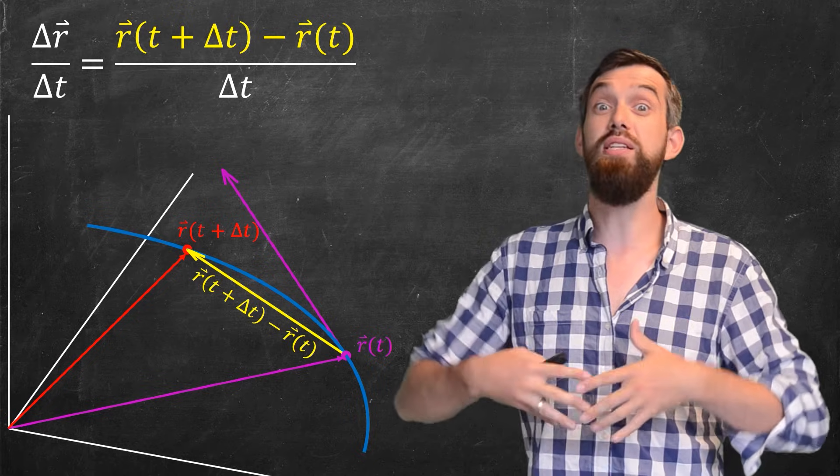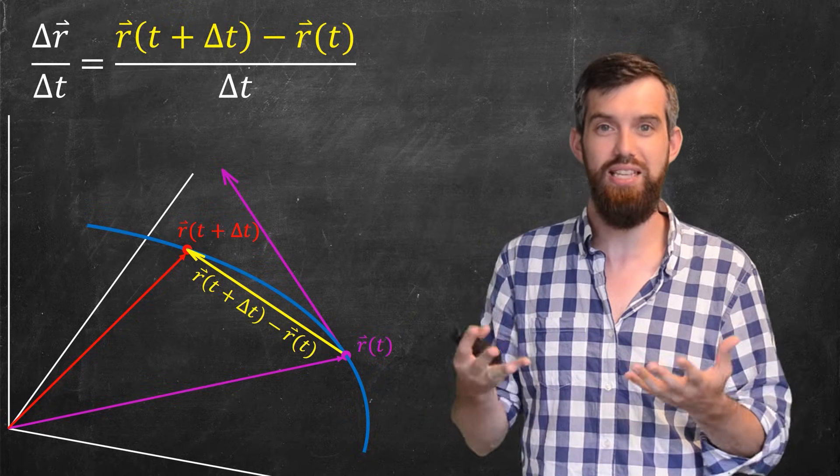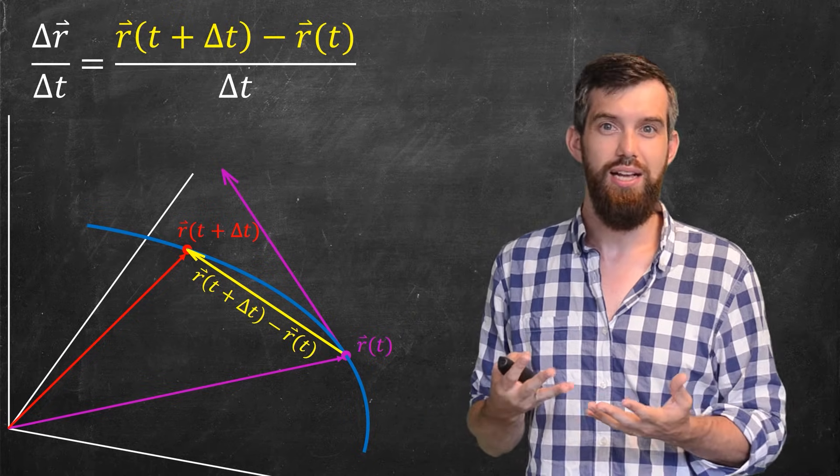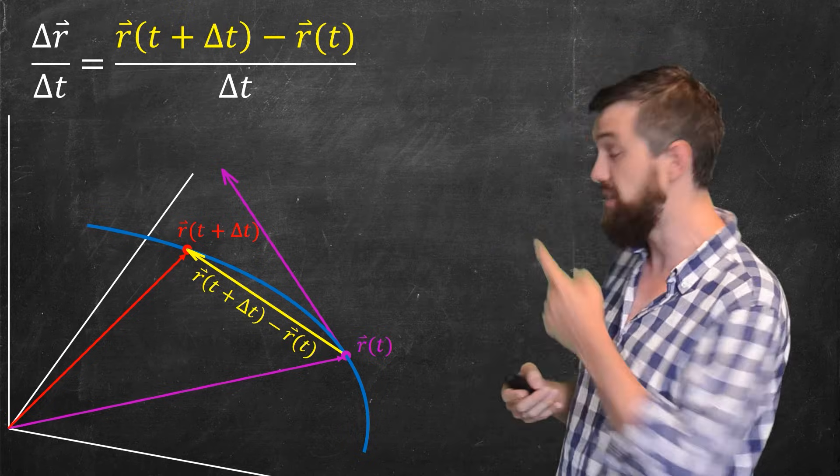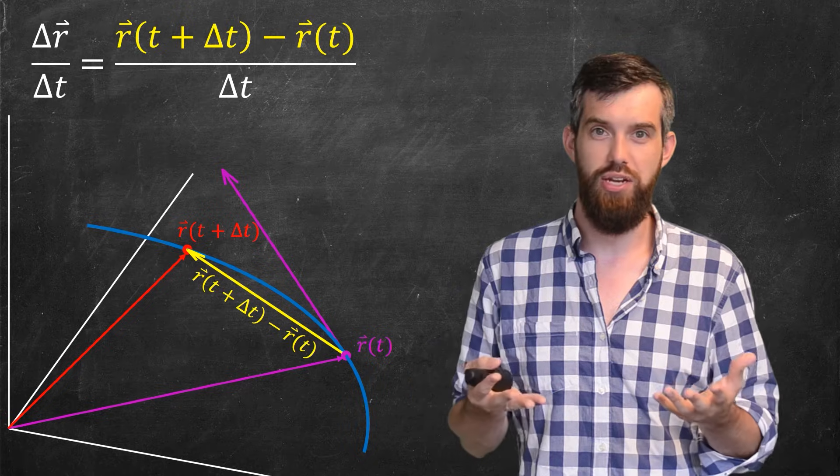So that's the numerator. What about the entire difference quotient? So I have to take this vector and I divide it by delta t. Delta t is a scalar, so that does not change its direction. It's still pointing the same direction as the yellow vector, but its length may change.